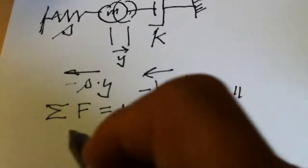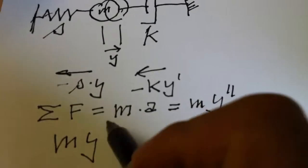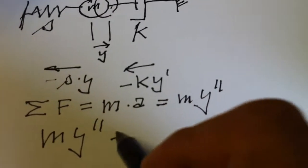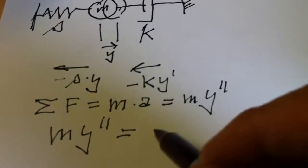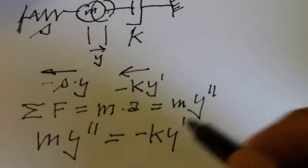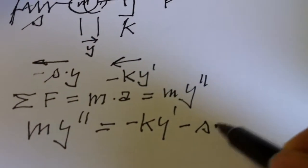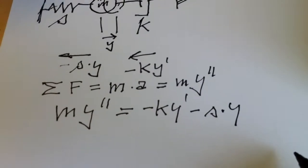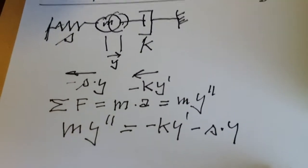So, we have a system that I will turn around and that can be written as M Y second equals minus K Y prime minus S times Y. This is a differential equation of the second order describing this oscillator.